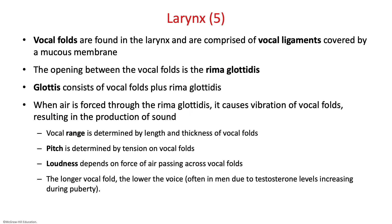The vocal folds are found in your larynx, comprised of vocal ligaments covered by a mucous membrane. The opening between your vocal folds is called the rima glottidis. The glottis consists of both the vocal folds and the rima. When air is forced through the rima, it causes vibration of the vocal folds, resulting in sound. Vocal range, pitch, and loudness depend on the length, thickness, and tension of the vocal folds — the longer the vocal folds, the lower the voice. Testosterone causes males' vocal folds to increase in length during puberty, which causes their voices to drop.